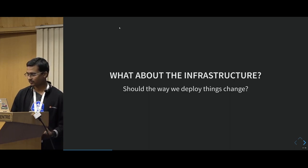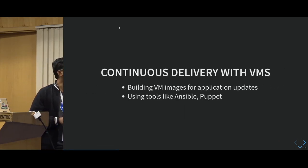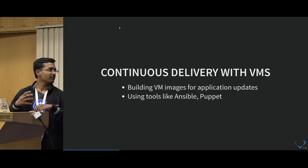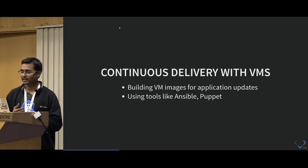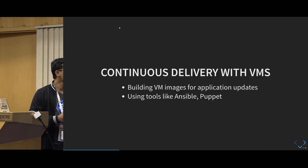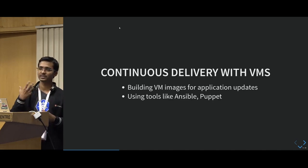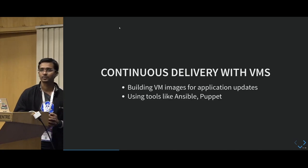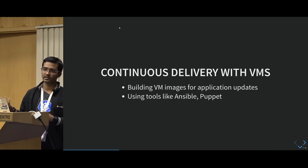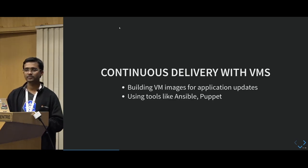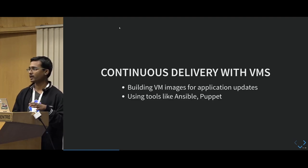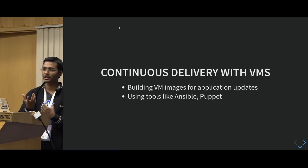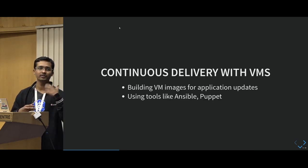Those also change. You start doing continuous delivery or deployment using the same infrastructure you had — VMs. There are two ways to do this. Some people choose building virtual machine images, which will run your VM for application updates. Whenever there is a new update, you build the image and start the virtual machines. Another way is using tools like Ansible, where you have your application artifacts built and deployed to your virtual machine.